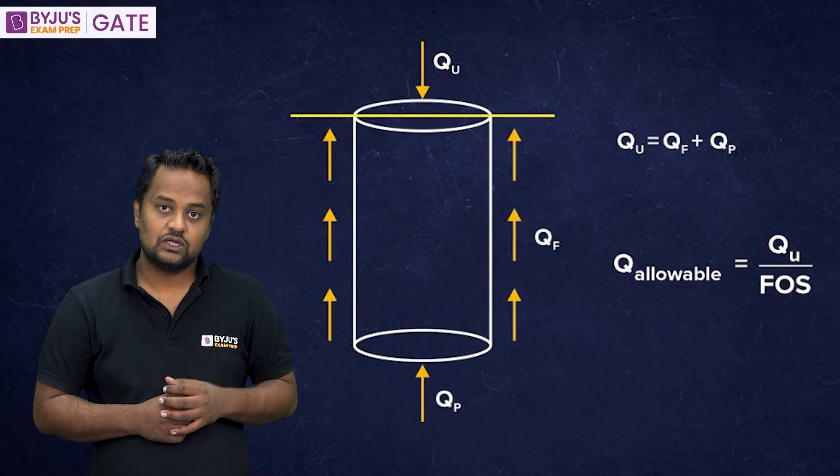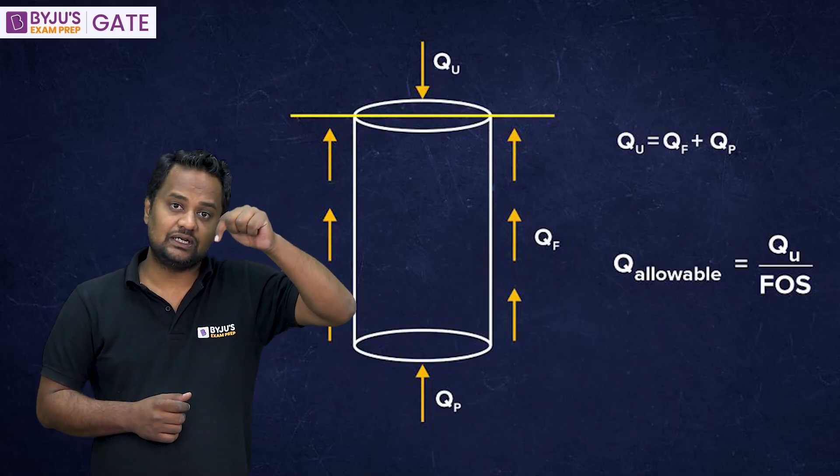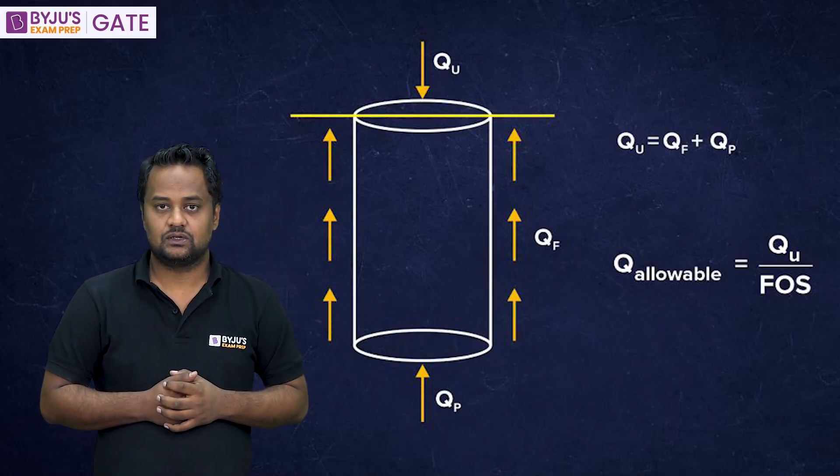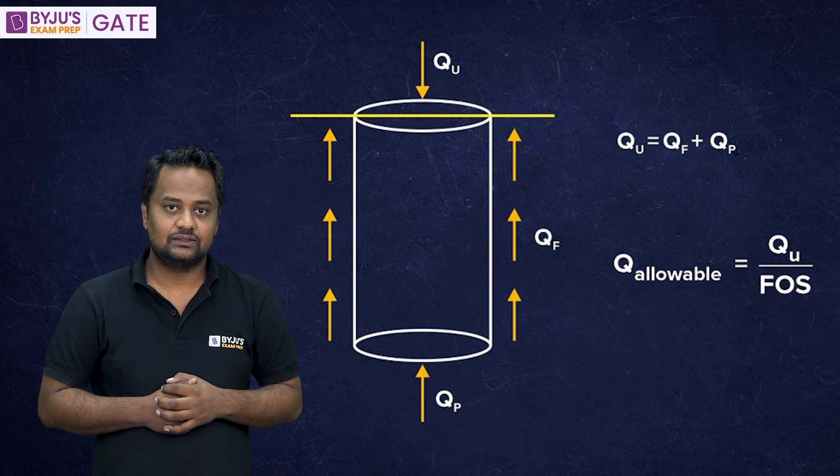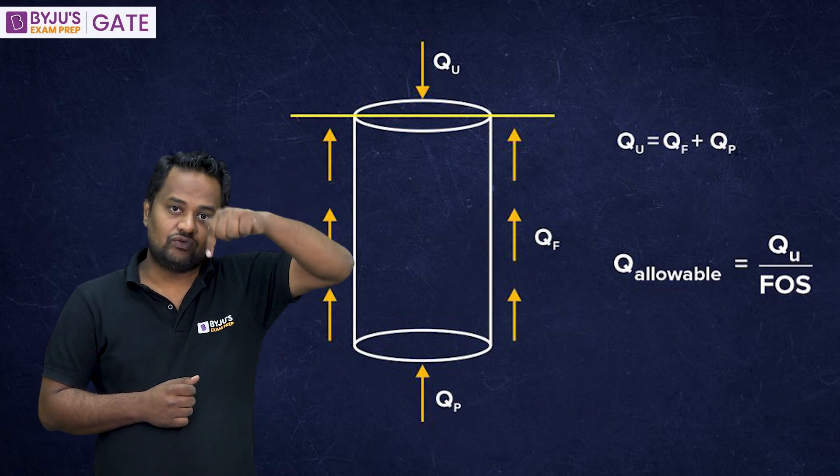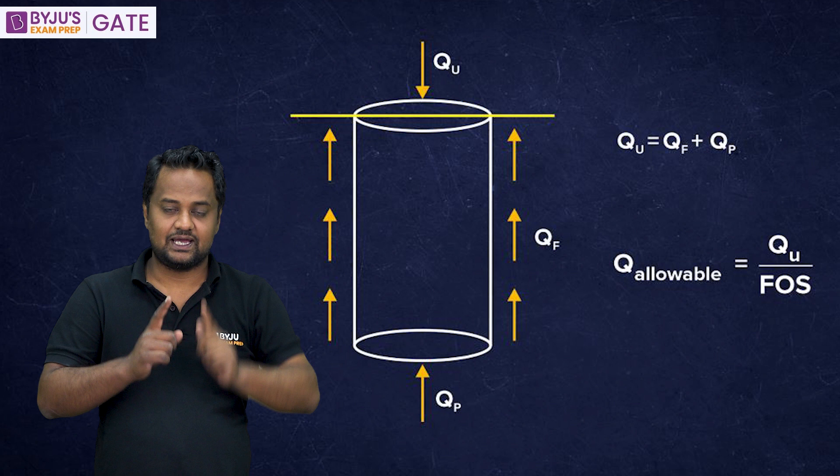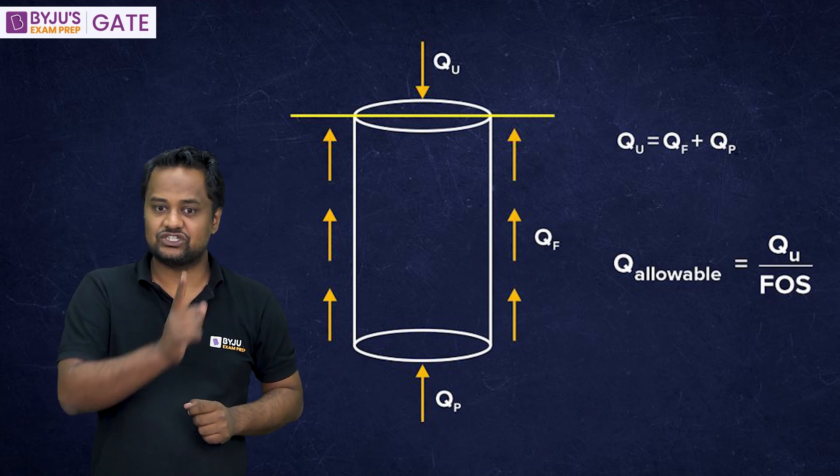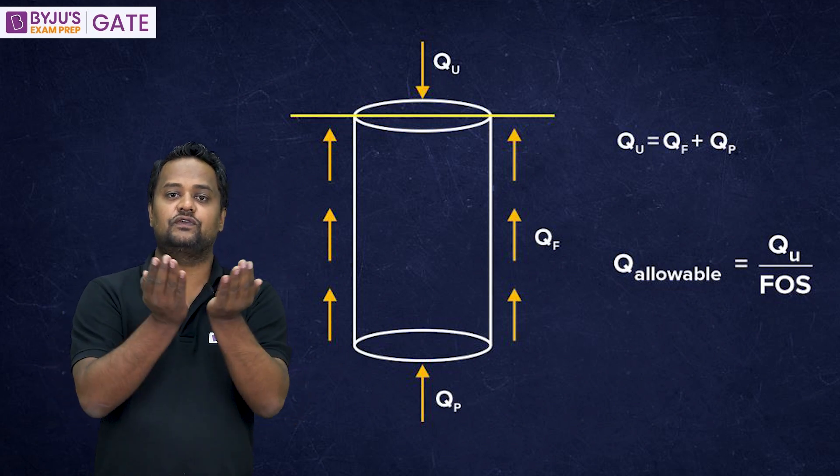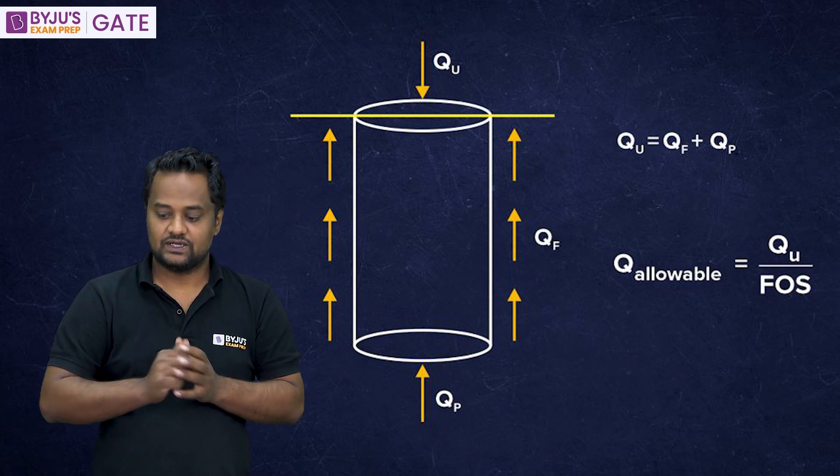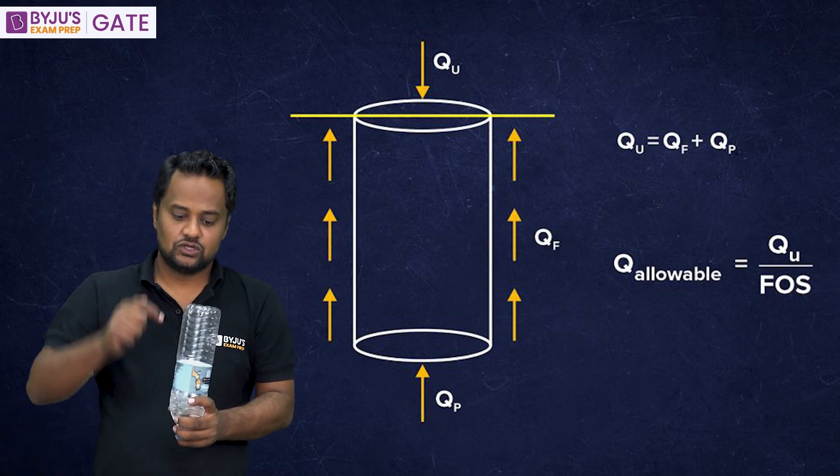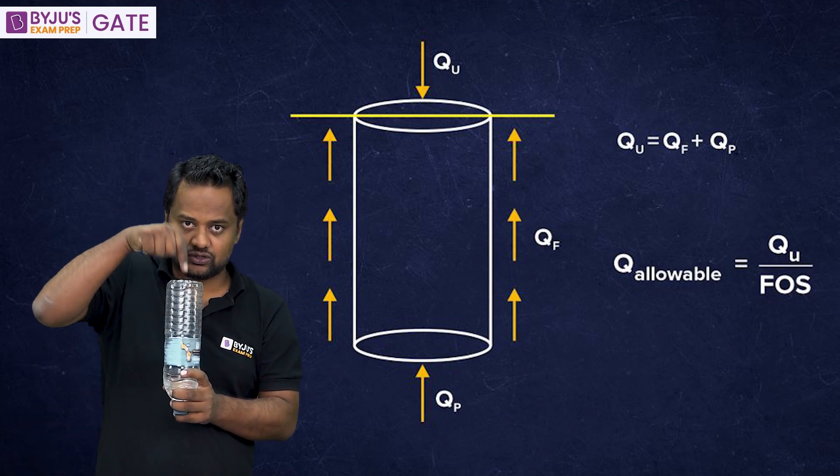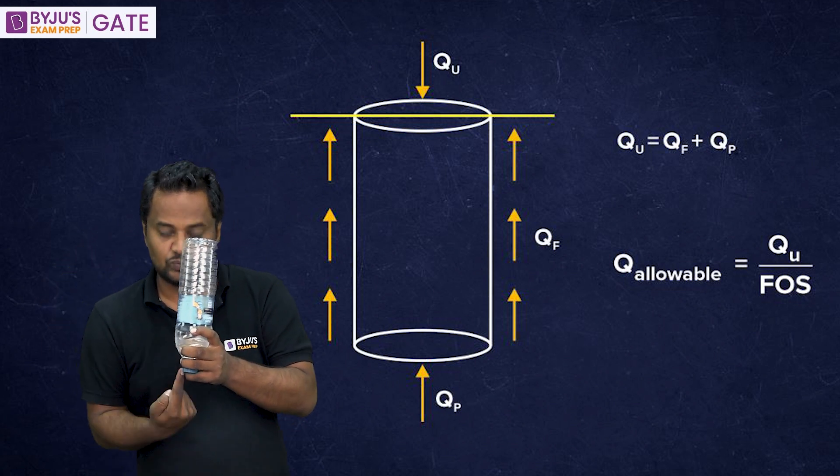Now, what is the load that can be carried by a pile as you can see in the figure? So, QU is the ultimate load that a pile can take and that vertical downward load is resisted from the end, that is QP and from the friction side QF. Suppose this is a pile. So, how much QU load can be acting on this? The vertical load should be balanced by QP at the base.